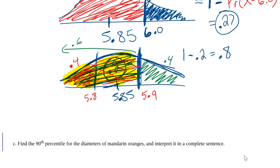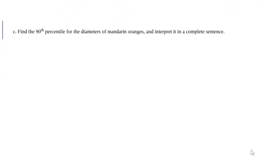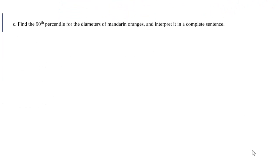Now moving on to part C of this example, find the 90th percentile for the diameters of these oranges, and then interpret that percentile. So once again, draw your distribution. In the center, we have the mean, 5.85.